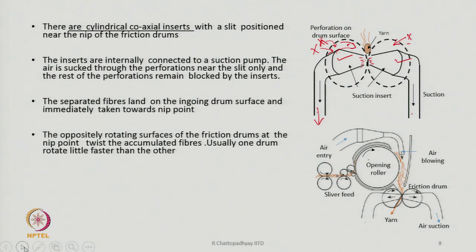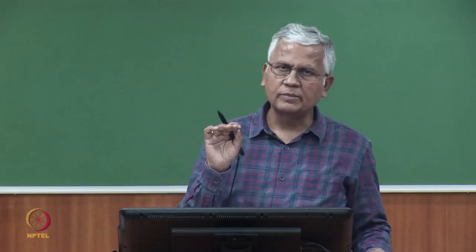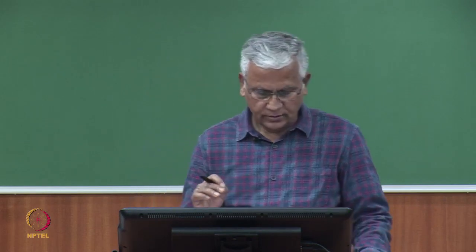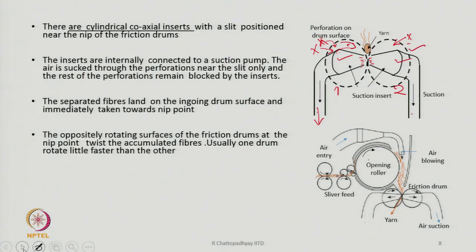The oppositely rotating surfaces of the friction drums at the nip point basically twist the accumulated fibers. Usually one drum rotates a little faster than the other — practically the same but one may be about 5 to 10 percent faster than the other. This helps to make the yarn a little stronger.